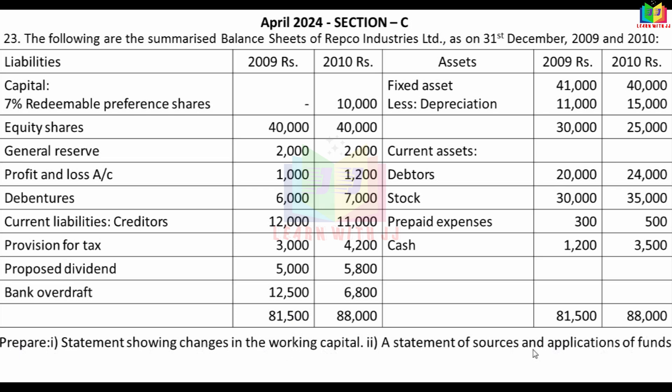For the working capital changes, we look at current liabilities: creditors, tax, proposed dividend, and bank overdraft. This is a straightforward problem. We need to identify changes in current assets and current liabilities.